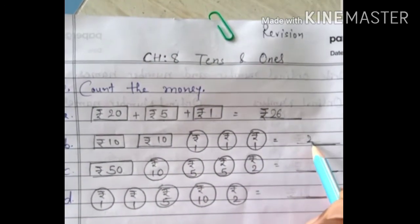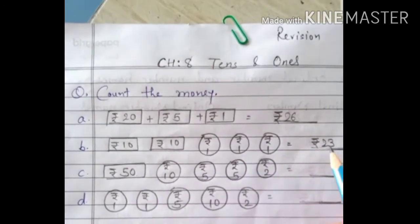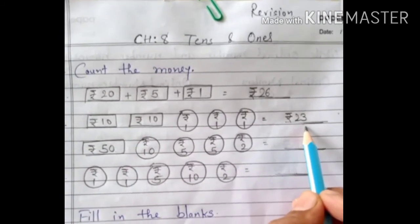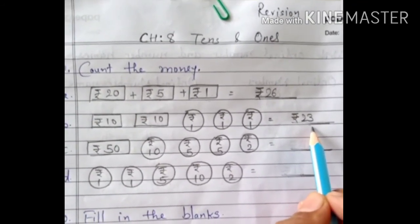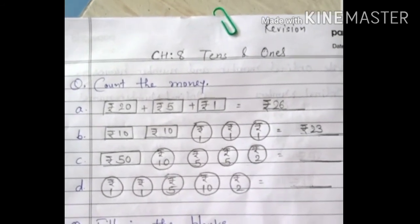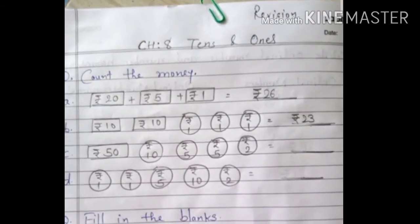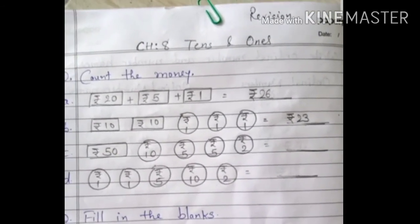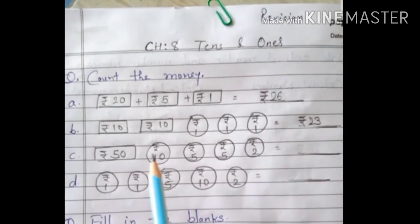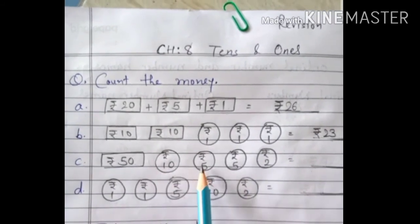Understood? Count the money like that. Now you should also count the money at home — from papa — and tell mommy this much amount. That way your counting will get better. Okay, next question: there is a ₹50 note, ₹10 note, ₹10 coin, ₹5 coin, ₹5 coin, and ₹2 coin.